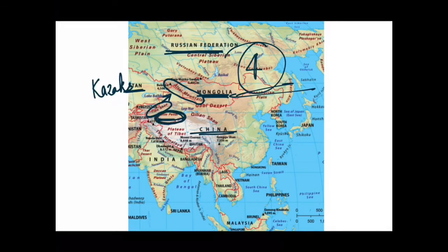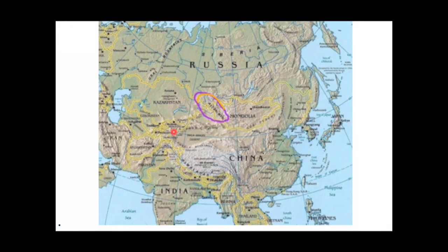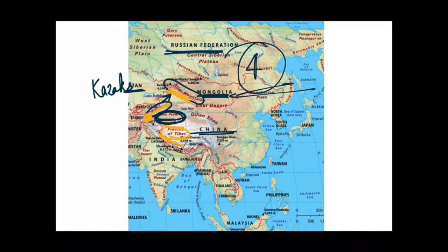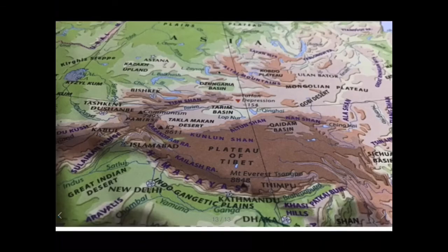Here you can see the Tien Shan Mountains, and here would be the Kunlun Shan Mountains, the Himalayan Mountains, the Plateau of Tibet, and the Pamir Knot. You must know the location of the Altai Mountains. In this map, you can also see the Altai Mountains touching the 4 countries: Mongolia, Russia, China, and Kazakhstan. To the north-east of the Altai Mountains lies the Kobdo Plateau, which is in Mongolia.